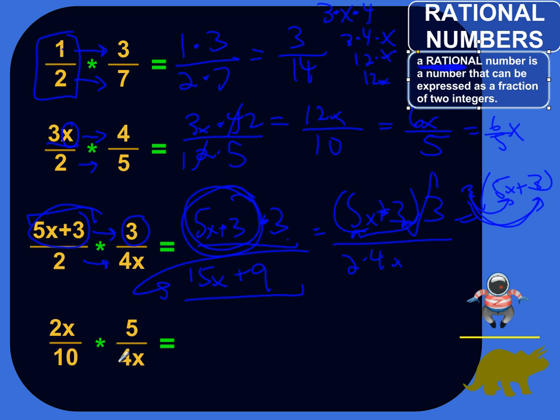Three times three is nine. So this whole top term becomes 15x plus nine, over two times 4x, which is 8x. Now we can't simplify that any further. There's no factors that we can pull out of both the numerator and the denominator, and then divide them out. So that would be the answer.